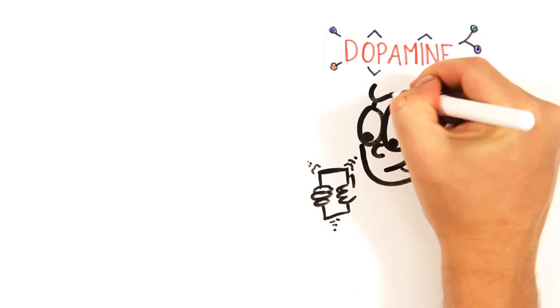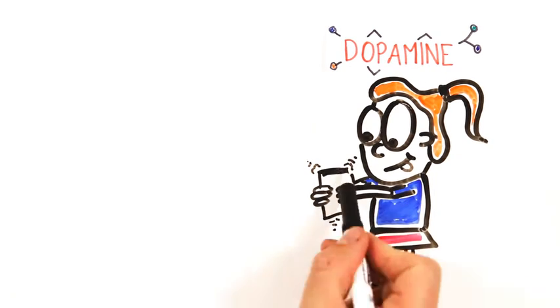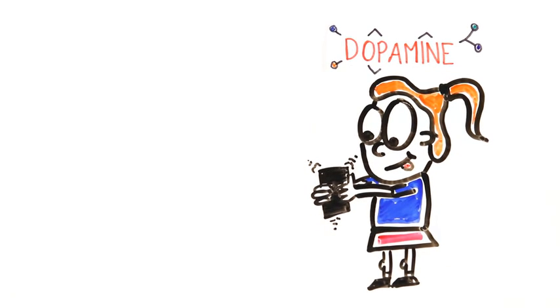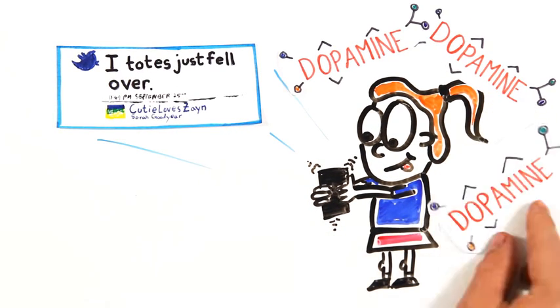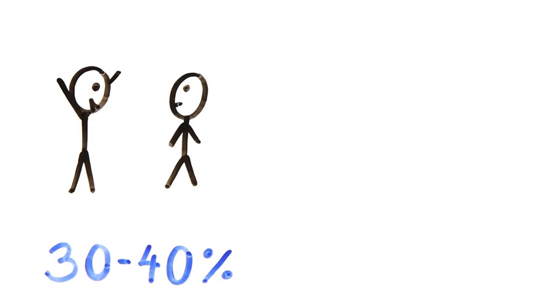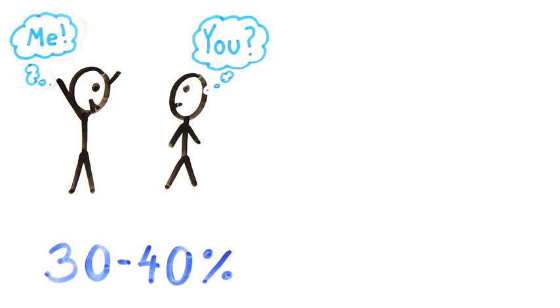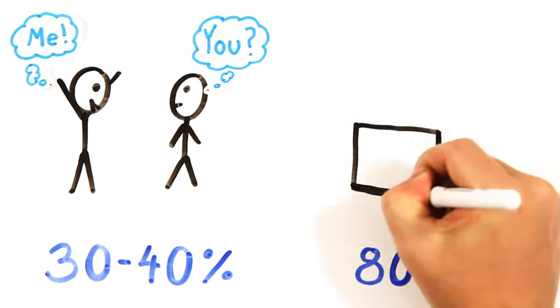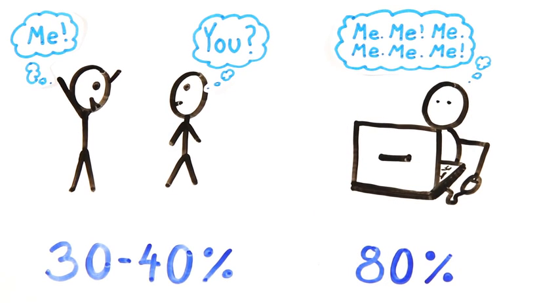Social media also triggers a release of dopamine, the feel-good chemical. Using MRI scans, scientists found that the reward centers in people's brains are much more active when they're talking about their own views as opposed to listening to others. Not so surprising, we all love talking about ourselves, right? But it turns out that while 30-40% of face-to-face conversations involve communicating our own experiences, around 80% of social media communication is self-involved.